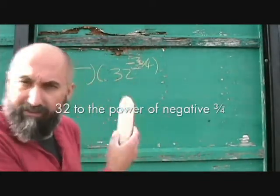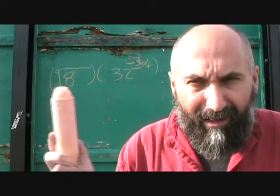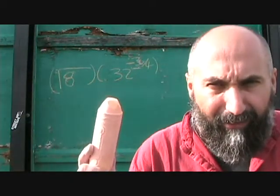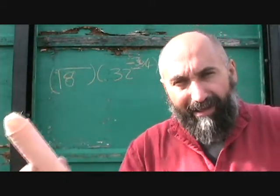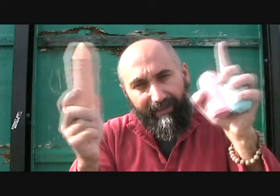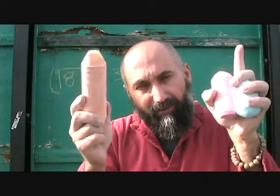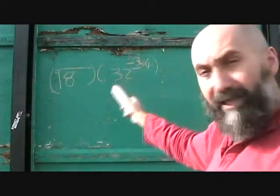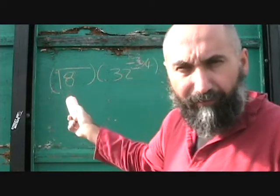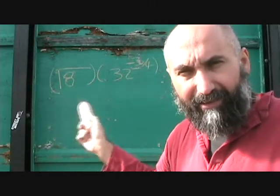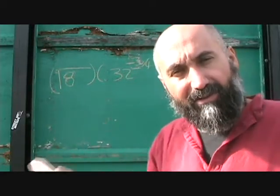Now, these are different bases — 8 and 32 are different bases. So we can't directly get the exponents involved. The only way we can add exponents together is if we have the same base. So what we need to do is convert 8 and 32 to the same base.